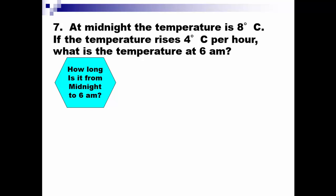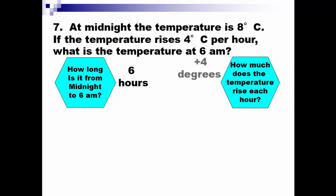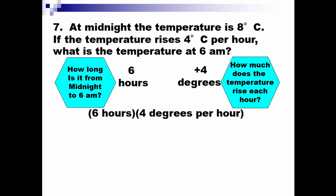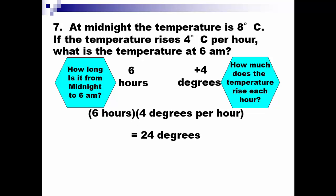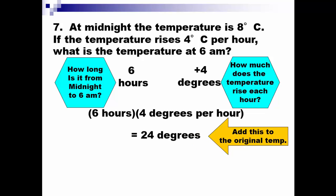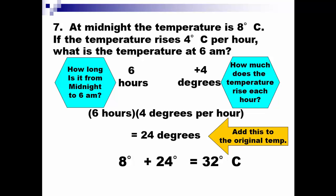How long is it from midnight until 6 a.m.? Midnight until 1, 2, 3, 4, 5, 6 — that's 6 hours. The temperature rises 4 degrees per hour, so what do you do with 6 and 4? In the first hour it rises 4 degrees, in the next hour it rises 4 degrees — so we're talking about multiplication. 6 times 4 is 24, so it rose 24 degrees over 6 hours. At midnight the temperature was 8 degrees Celsius, so we add 24 to 8. By 6 a.m. it's 32 degrees Celsius.